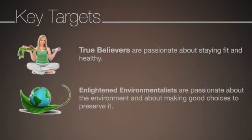Enlightened environmentalists are passionate about the environment and about making good choices to preserve it. These shoppers are committed to making healthier choices and go out of their way to shop at stores that carry natural and organic products. Enlightened environmentalists are older than true believers, averaging 63 years old, but have a slightly lower median income. It is interesting to note that both of these segments share the same top priorities regarding food, home care, and personal care.